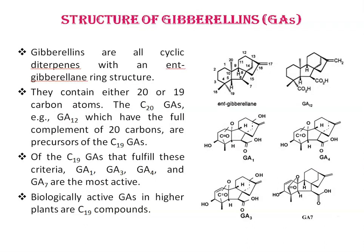Gibberellins are all cyclic diterpenes with an ent-gibberellin ring structure. They contain either 20 or 19 carbon atoms. The C20 gibberellins, for example GA12, which have the full complement of 20 carbons, are precursors of the C19 gibberellins. The C20 gibberellins do not have bioactivity per se, although there are a large number of C19 gibberellins, and many of these do not have all the structural requirements for bioactivity.